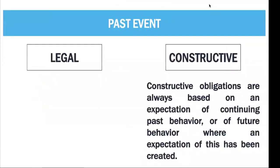Your past event is your obligating event, which can either be a legal event or a constructive event. If it is a legal event, it is created by virtue of law or contract. For example, you entered into a contract to deliver $50,000 of your products to a customer and the customer already paid you — we call that deferred revenue. The past event which gave rise to that obligation is a contract, so it is based on law.